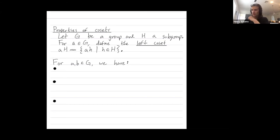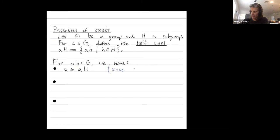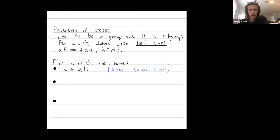Here are some important properties. For any two elements a and b in our group, we have the following. First of all, a is in its own coset aH. Why is this? This is just because you can write a as a times the identity. And a times the identity is clearly in the coset, because the identity is always in any subgroup H. So since an element is always in its own coset, all of the cosets for a group contain every element in the group.